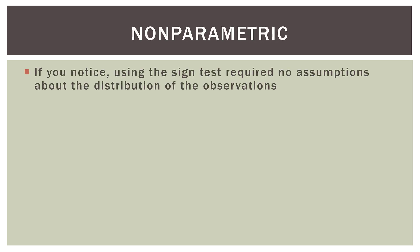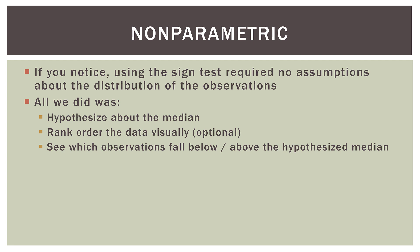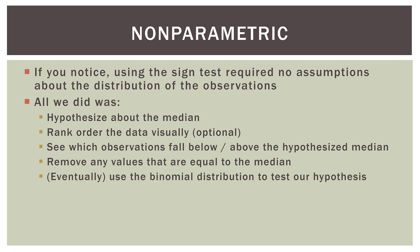So if you notice, using the sign test required no assumptions about the distribution of the observations. The only reason we actually used the underlying numbers was to determine if they were above, below, or in rare cases equal to the hypothesized median. We didn't make any assumptions if the data was normally distributed, uniformly distributed, or whatever else. All we did was hypothesize about the median, rank order the data visually, which is actually technically optional. You don't have to do that in stats software, but it's easier to see if we put them in order. Then we sort of see or note which observations fall below or above. That's it. Then we remove any values that are equal to the median. And actually we would do that first. I should have that bullet point third. So hypothesize about the median, rank order the data visually, which is technically optional. We would remove any values that are equal to the median and then see which observations fall below or above. And then eventually we'll use the binomial distribution to test our hypothesis. This video was just an overview of kind of what's going on and how we look at data differently in a nonparametric mindset.